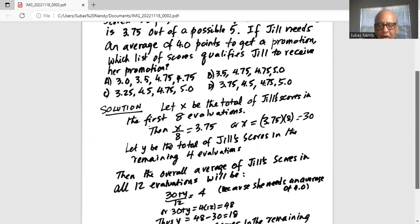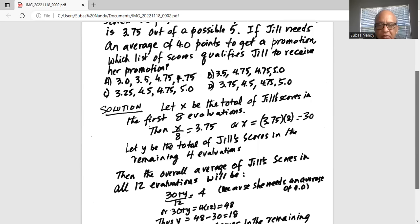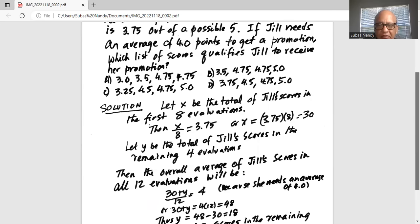30 plus y divided by total 12 evaluations, and that is equal to 4 because she needs an average of 4.